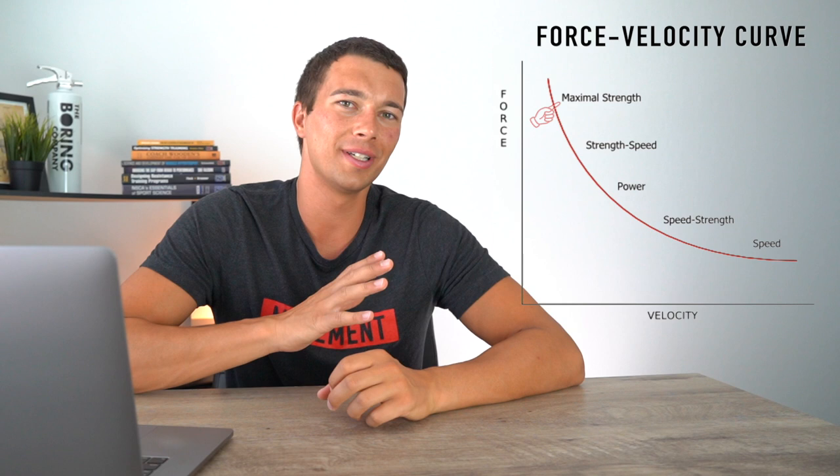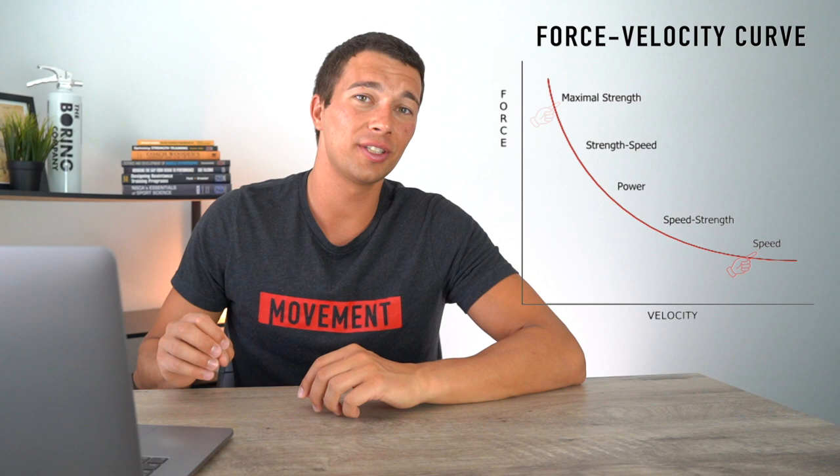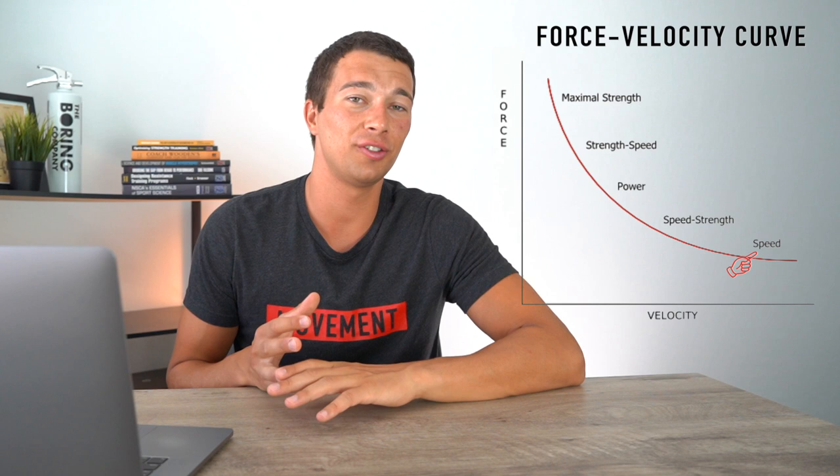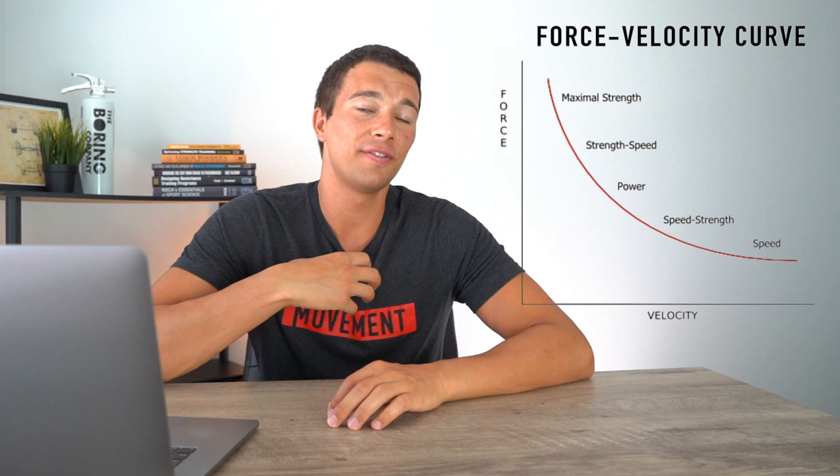Let's start off with a quick review of the force-velocity curve. On one side we have high force — that's the max strength part where powerlifters kind of live. On the very other side we have speed, where max velocity sprinting or really fast change of direction occurs. There are a lot of variables in between. For this video we're gonna focus on speed strength, which is a really important physiological quality to understand if we want to train athletes who perform on the bottom end of this force-velocity curve.